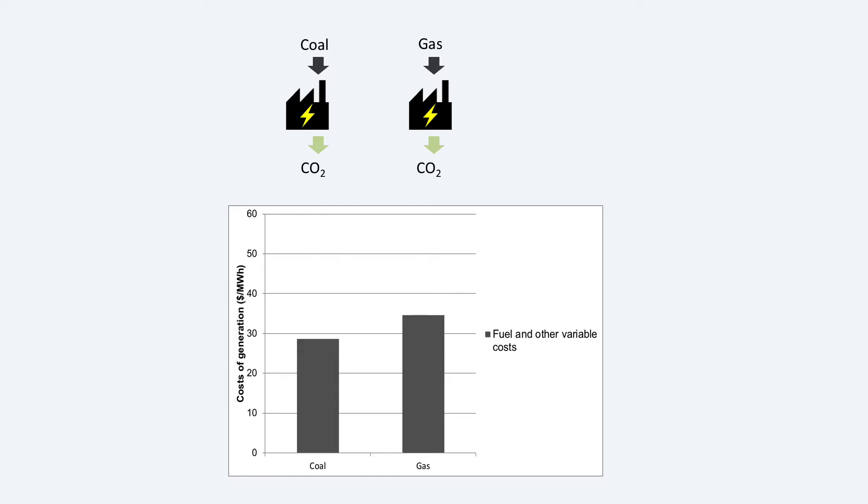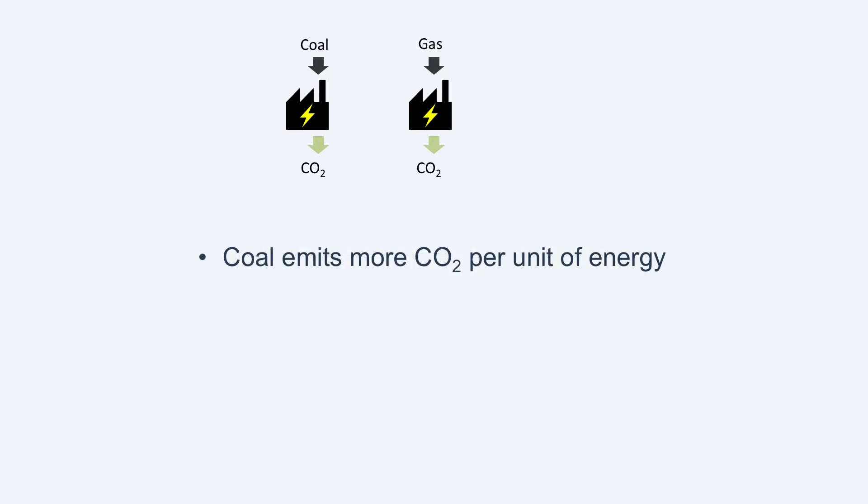These costs are shown here by the height of the grey bars. The data here is illustrative but fairly realistic. However, coal-fuelled power plants emit more carbon dioxide for each unit of electricity produced than gas-fuelled power plants. This is mainly because coal is an intrinsically higher-emitting fuel and creates nearly twice as much carbon dioxide per unit of energy as does gas.